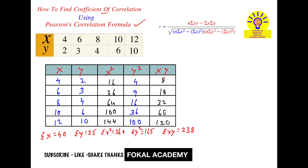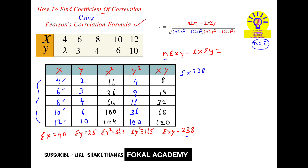The numerator is n times summation of xy minus summation of x times summation of y. Substituting: n is the number of data points — there are five data points, so n equals 5. That is 5 times 238 minus 40 times 25. Five times 238 is 1190, minus 40 times 25 which is 1000. So the numerator equals 190.